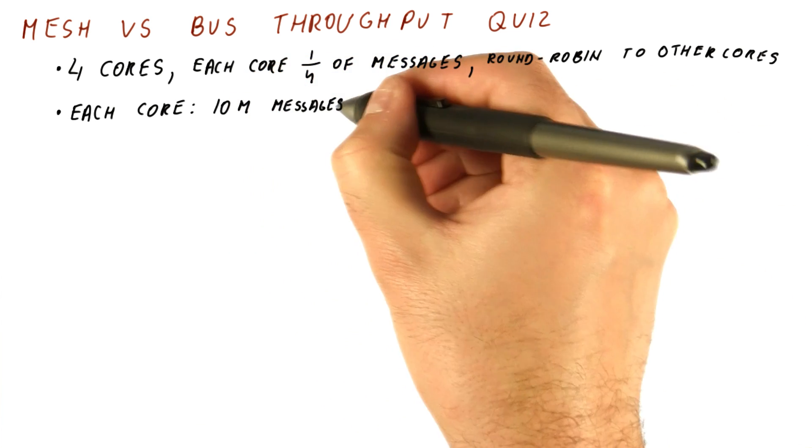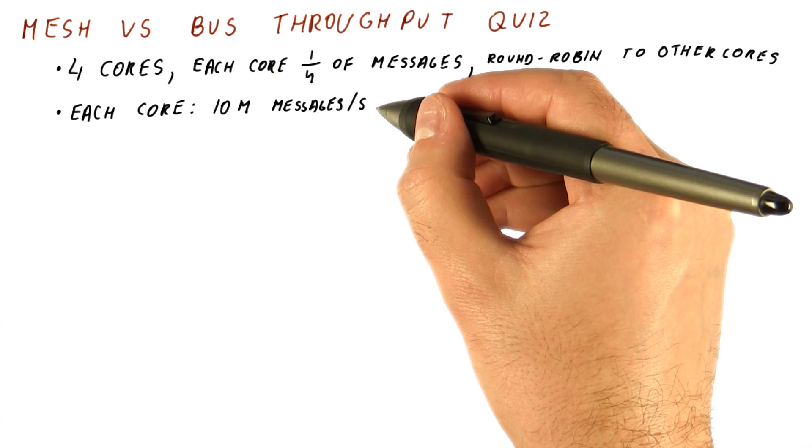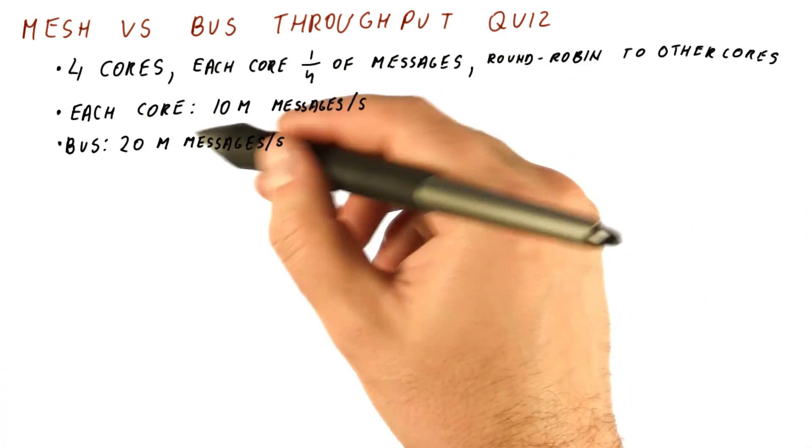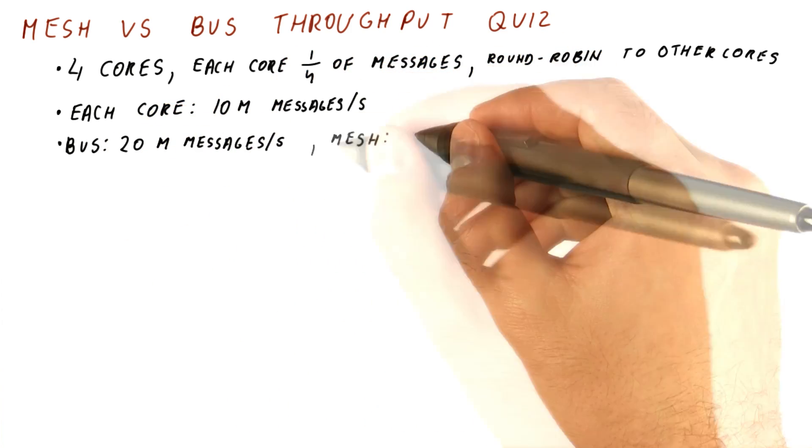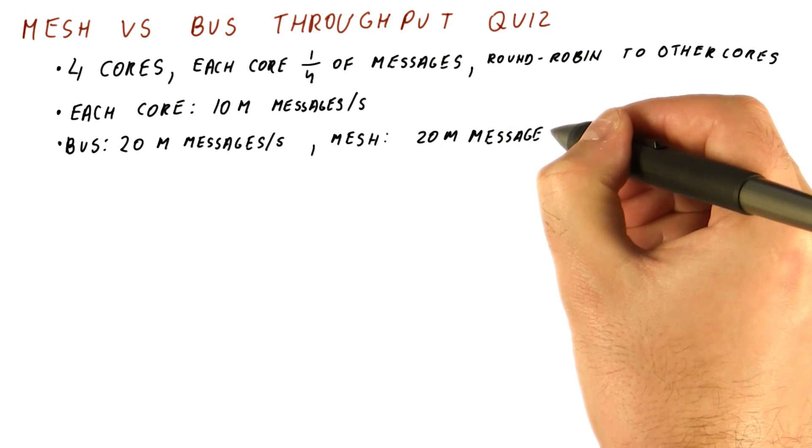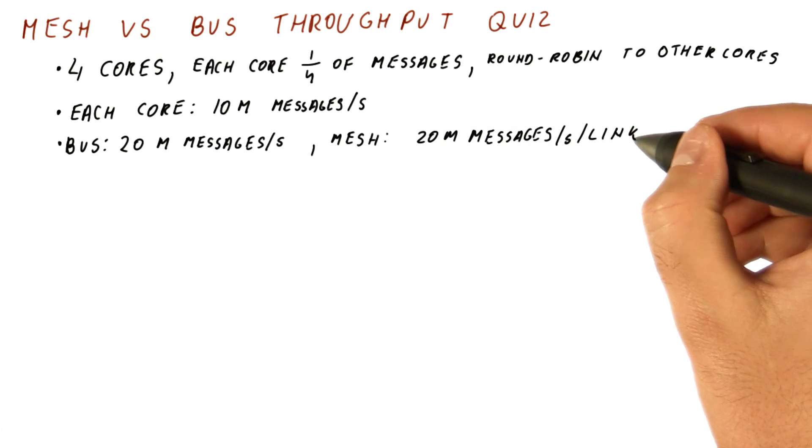Each core sends 10 million messages per second. The bus can support 20 million messages per second. The mesh can support 20 million messages per second per link.